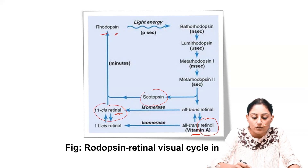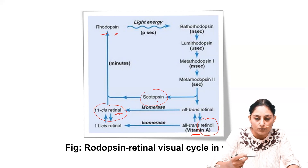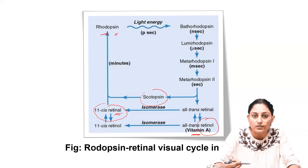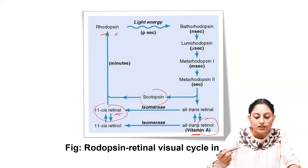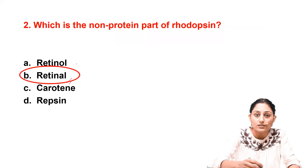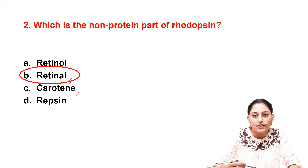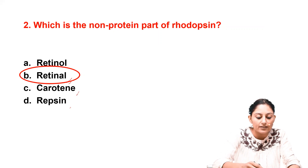Scotopsin is the protein part of rhodopsin and the non-protein part is retinal. So retinal is the right answer. Retinol is the vitamin A form, carotene is the precursor for vitamin A, and the remaining option is incorrect. The right answer is retinal.